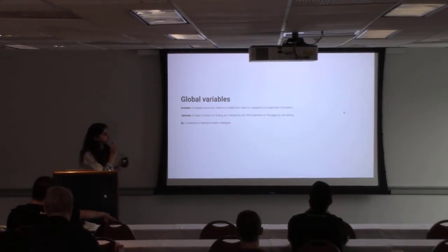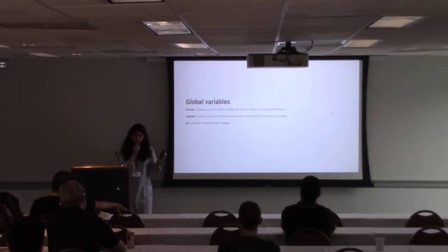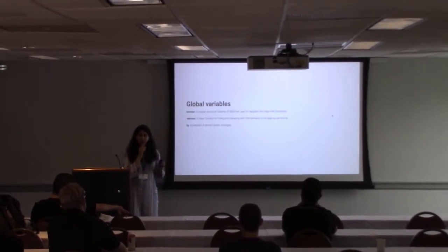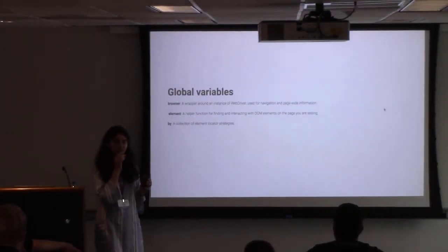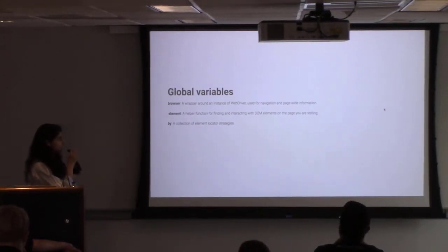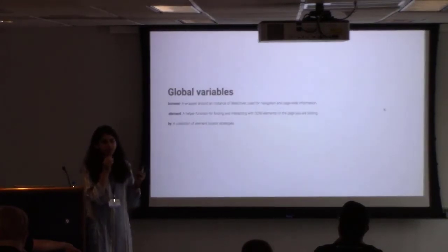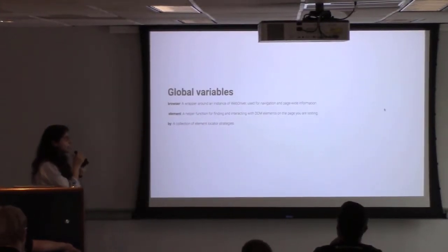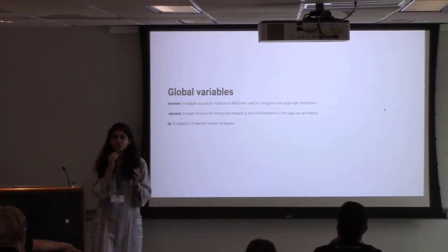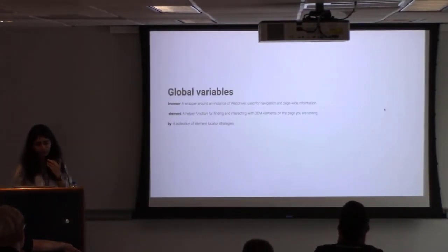Protractor exports these global variables. First is `browser` — a wrapper around a WebDriver instance for navigation and page-wide information. `browser.get` loads the page; it expects Angular to be present, and if the Angular library is not found, it throws an error. Next is `element` — a helper function for finding and interacting with DOM elements. The element function accepts a locator strategy and returns an ElementFinder object. You can locate elements using `by.id`, `by.css`, `by.name`, `by.model`, and others.